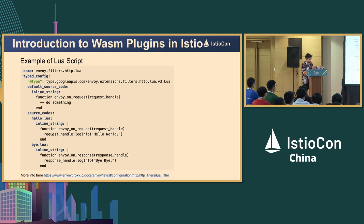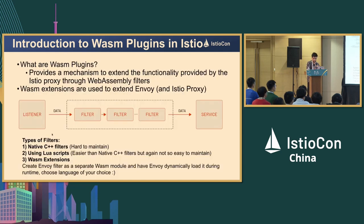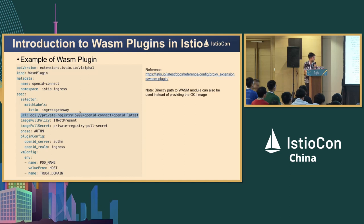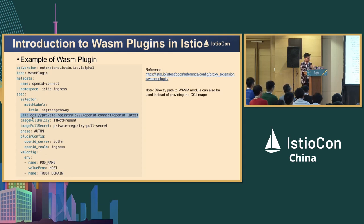With Lua, we need to define the complete source code in the YAML itself. The other method, which is quite simpler, is creating a new Wasm extension. We program whatever functionality we want using the Wasm native APIs from Envoy. Using whatever language you want — maybe Go or C++ — you can create the Wasm extension. A Wasm plugin in Istio requires you to define the VM configs, plugin configs, and the URL of your Wasm plugin — it could be an OCI image or a direct Wasm module path.